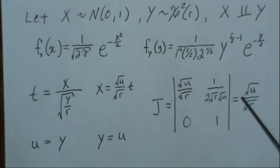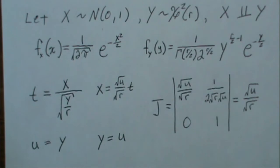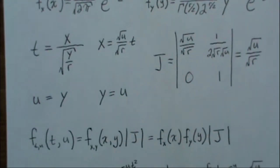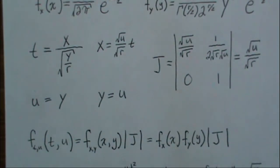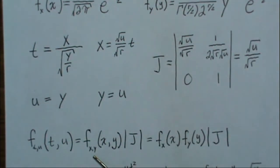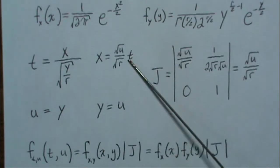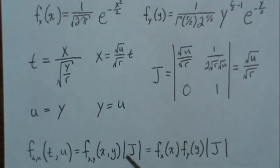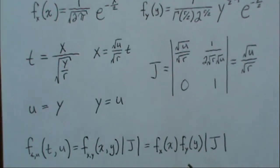Take the determinant, we get the square root of u over the square root of r. And we calculate the density of the joint density of t and u. That's equal to the joint density of x and y with this x and y plugged in here times the absolute value of the Jacobian. And since x and y are independent, we can separate their densities, and then it's easier to plug in those values.